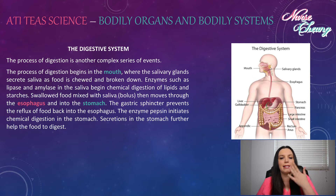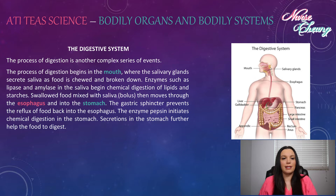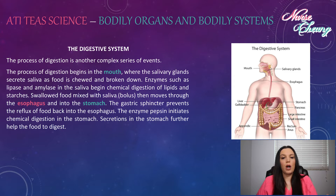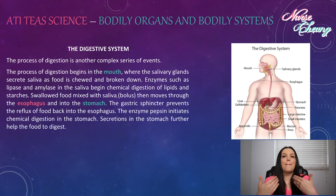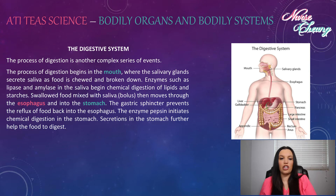The process of digestion begins in the mouth, where the salivary glands secrete saliva as food is chewed and broken down. Enzymes such as lipase and amylase in the saliva begin chemical digestion of lipids and starches. Swallowed food mixes with saliva, then moves through the esophagus and into the stomach. The gastric sphincter prevents the reflux of food back into the esophagus. The enzyme pepsin initiates chemical digestion in the stomach, and secretions in the stomach further help digest the food.